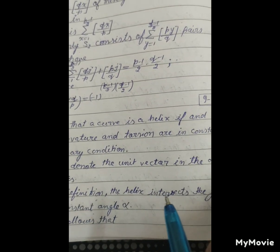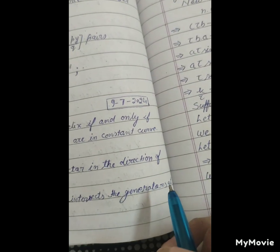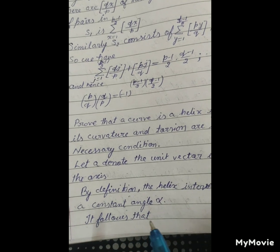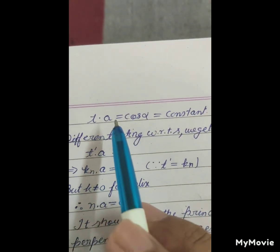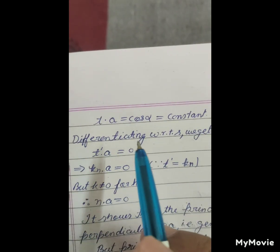By the definition, the helix intersects the generators at a constant angle alpha. It follows that t dot A equals cos of alpha is constant.